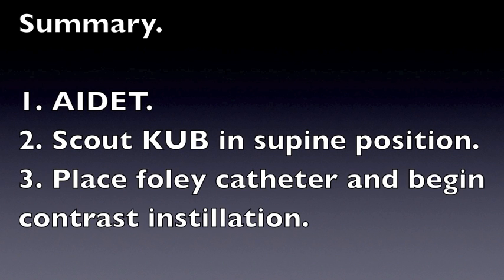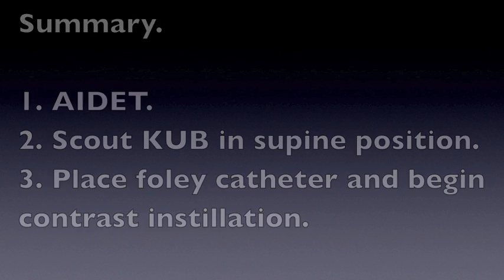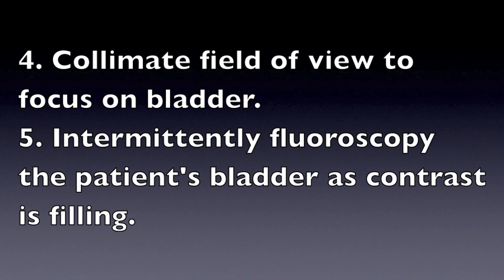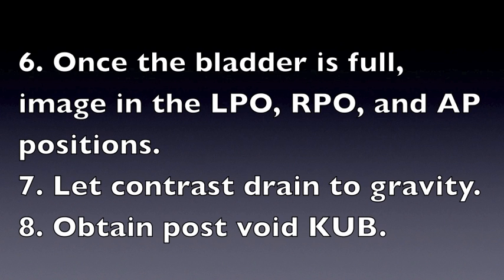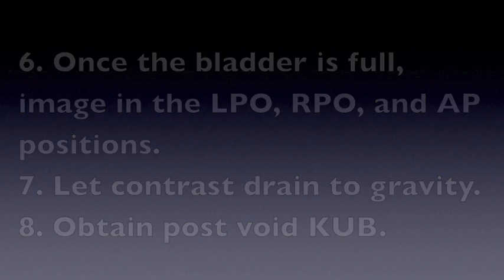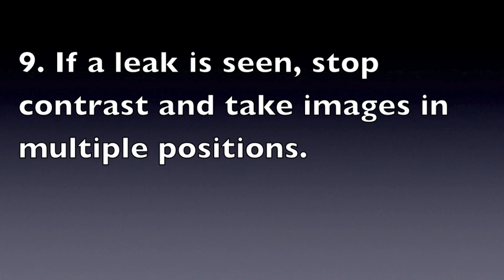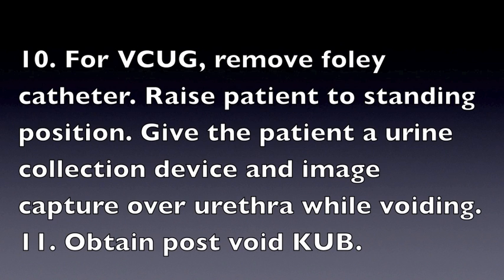Summary: 1. AIDIT. 2. Scout KUB in supine position. 3. Place Foley catheter and begin contrast installation. 4. Collimate field of view to focus on bladder. 5. Intermittently fluoroscopy the patient's bladder as contrast is filling. 6. Once the bladder is full, image in the LPO, RPO, and AP positions. 7. Let contrast drain to gravity. 8. Obtain post-void KUB. 9. If a leak is seen, stop contrast and take images in multiple positions. 10. For VCUG, remove Foley catheter, raise patient to the standing position, give the patient a urine collection device, and image capture over the urethra while voiding. 11. Obtain post-void KUB.